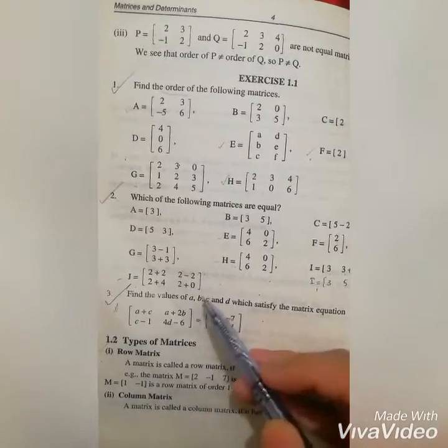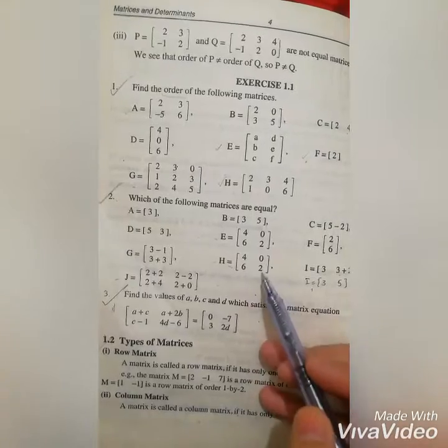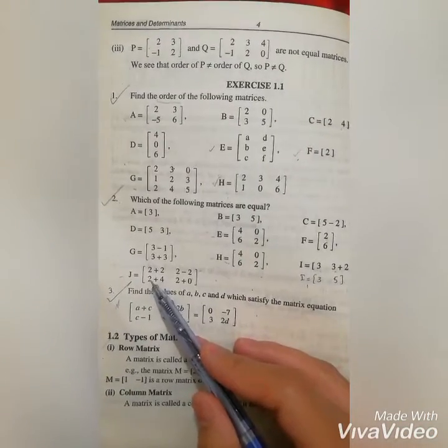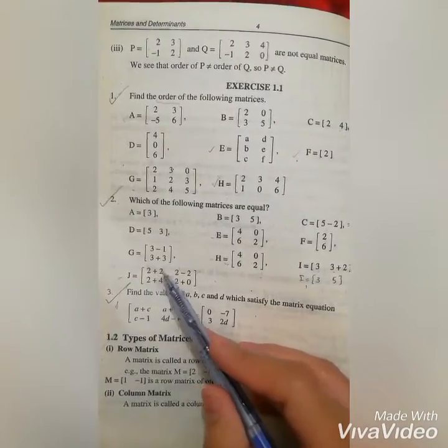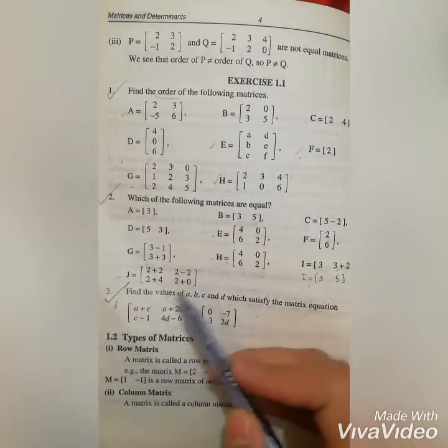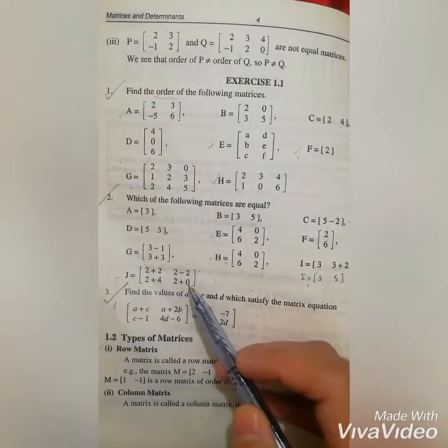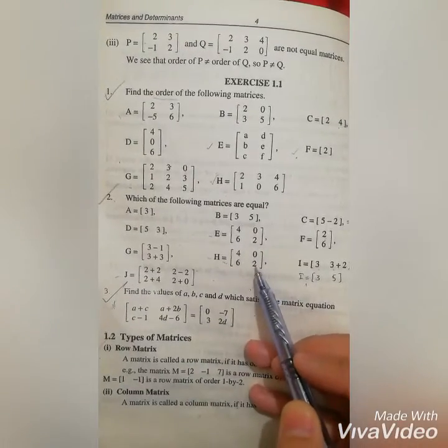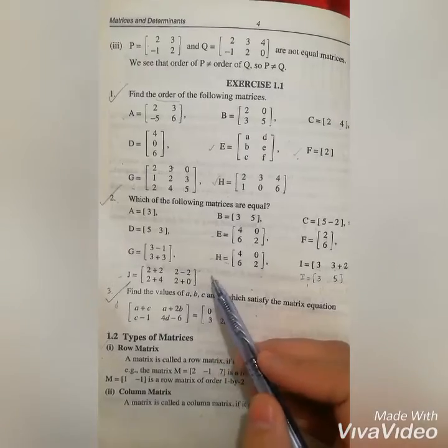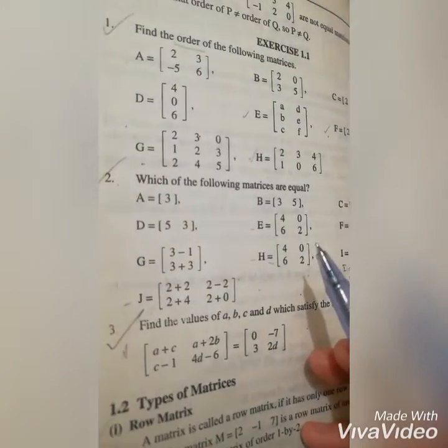Now for H - we have 4, 6, 0, and 2. If we have J, there is 4 here, same as H. Then 6 minus 6 gives 0, and 4 plus 2 gives 6. So J equals H.